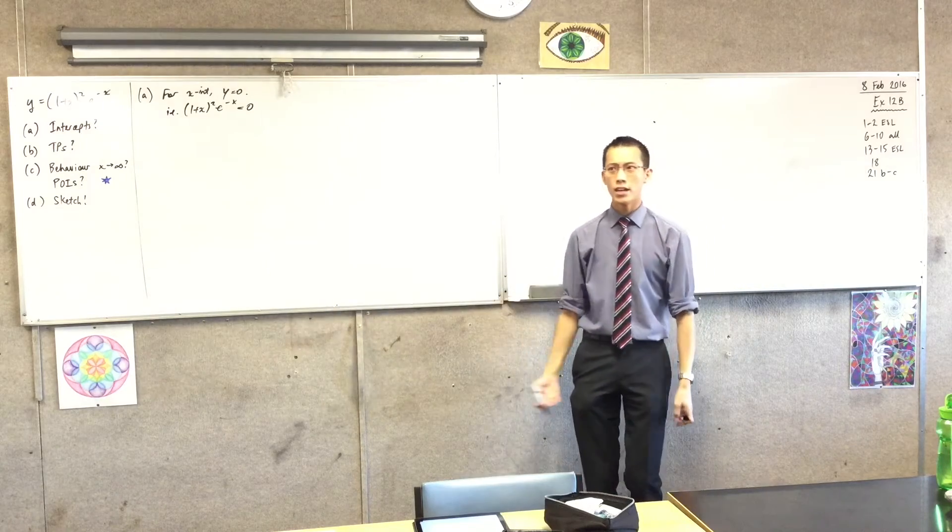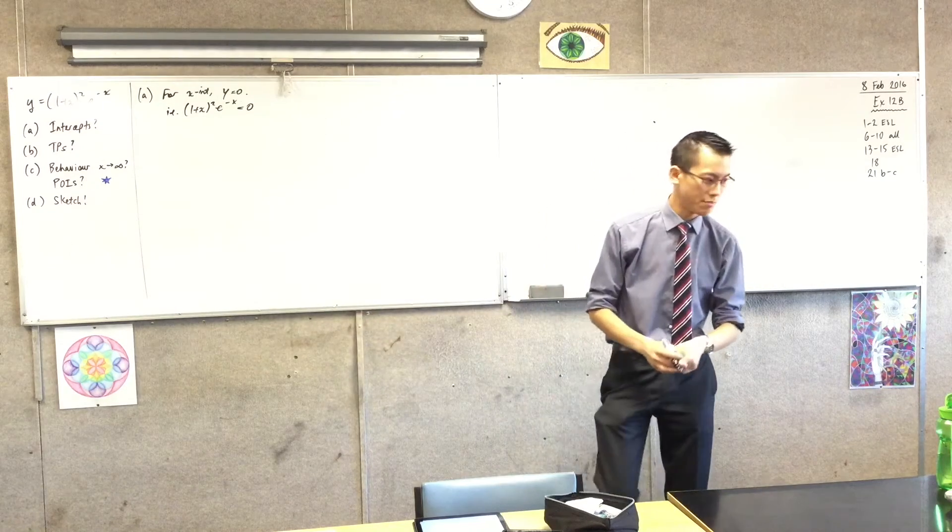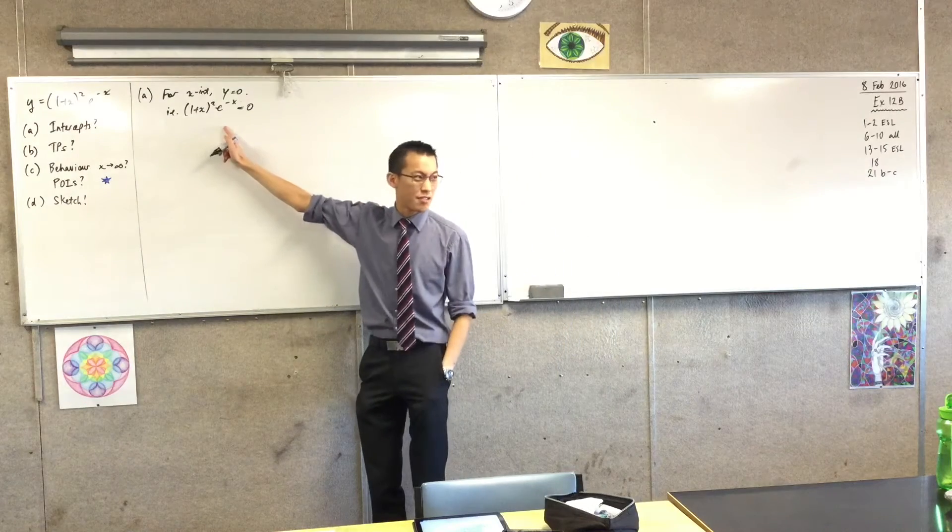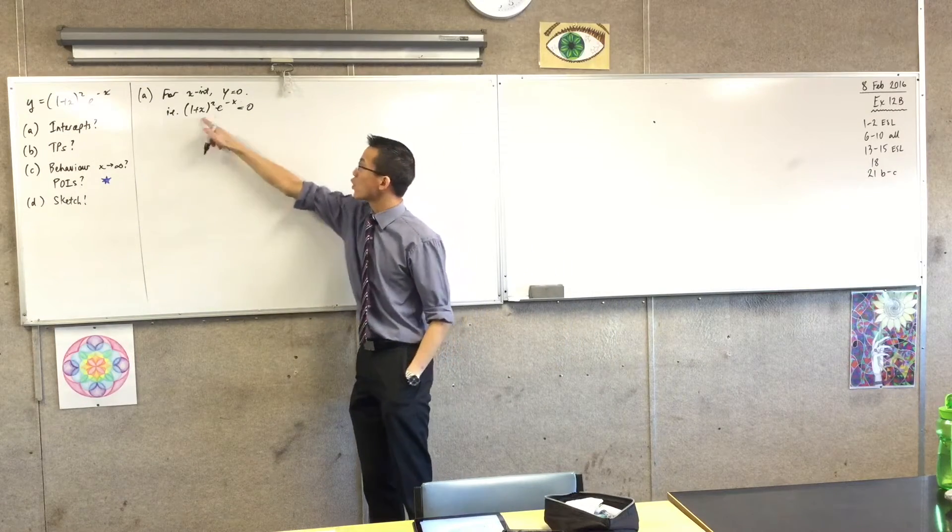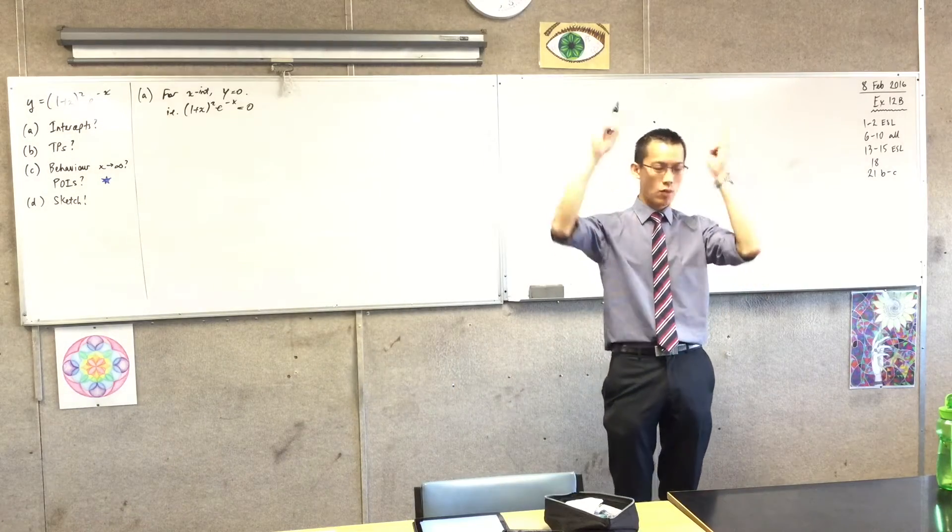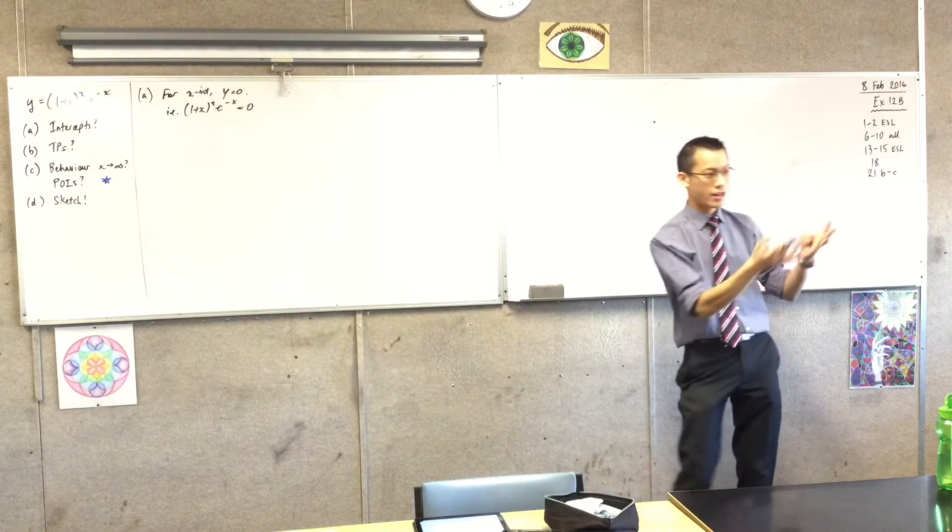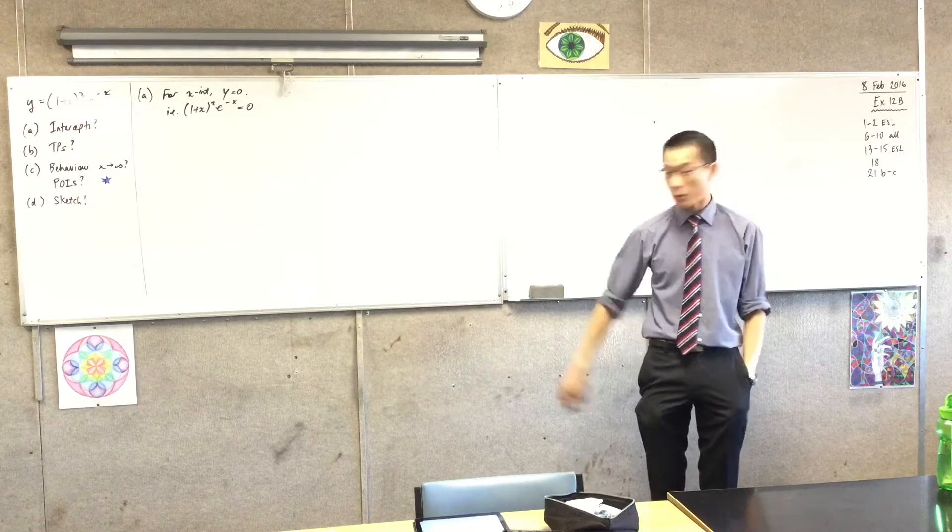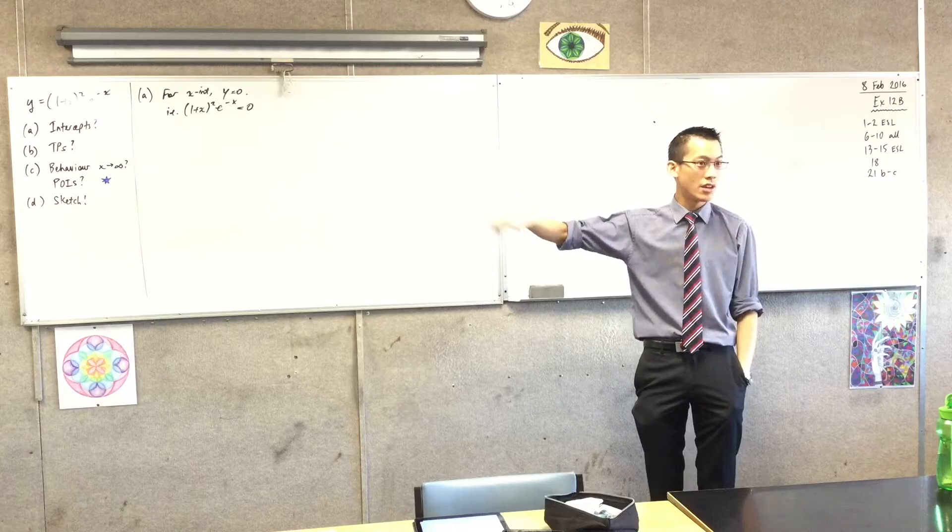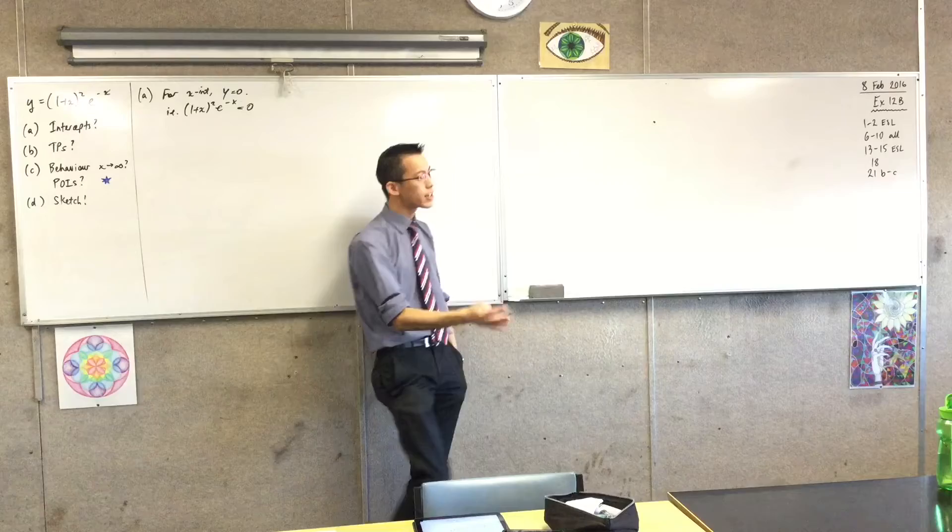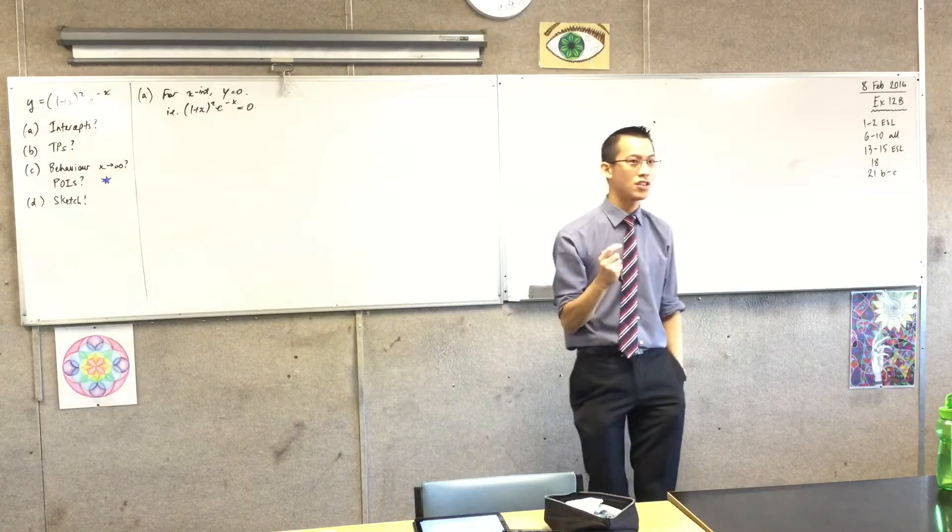At this point here, I think it's kind of handy to say, like, you've got two factors here. Well, you kind of have three, right? You've got 1 + x, you've got 1 + x again, and then you've got e^(-x). Now, I'm about to ignore the e^(-x) in a second. I'm going to treat it as not part of the question. The reason why is because it doesn't contribute anything, it can never contribute anything to solving this equation.